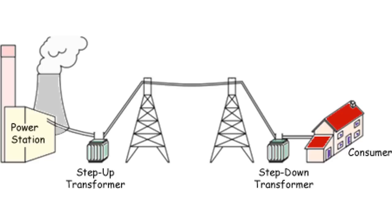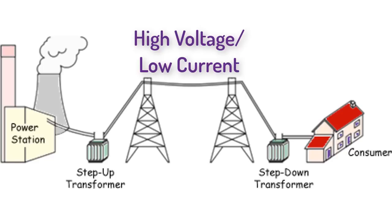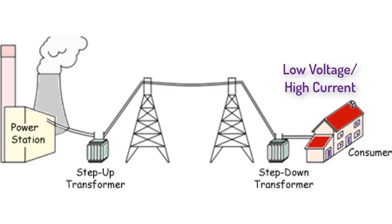With transformers, you can build your power plant far away, then transform the electricity to high voltage and low current so that much less power is lost to heat going down the line. At the other end, you transform it back to lower voltage and high current for use. And luckily for Westinghouse, Edison's new light bulb worked just as well on alternating current as it did on direct current.